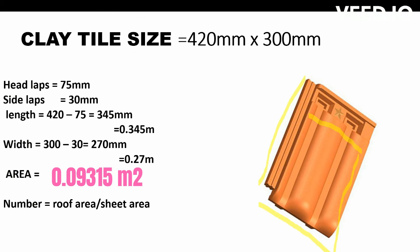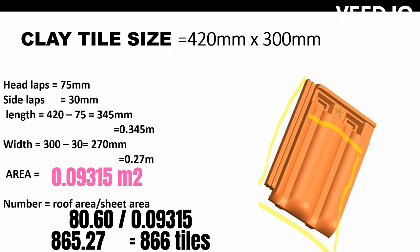The number of clay tiles needed is the roof area divided by the clay tile area: 80.60 ÷ 0.09315 = 865.27. Rounding up, we need approximately 866 clay tiles to roof a 12-meter by 10-meter gable roof. Thank you for your time and support — until next time, bye bye.